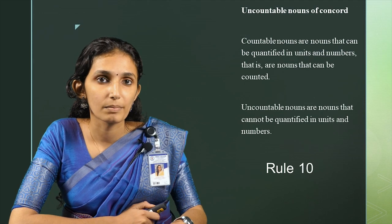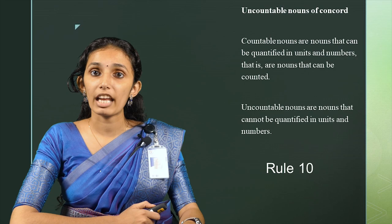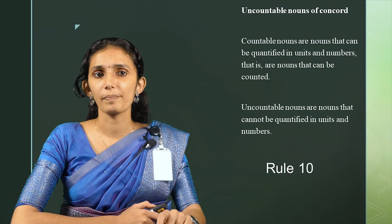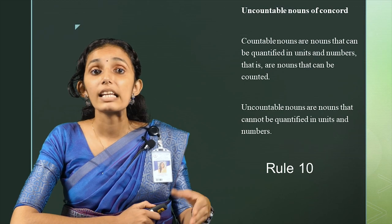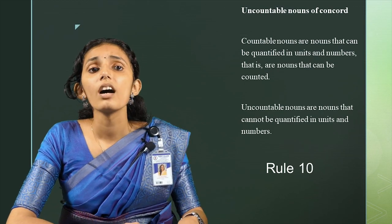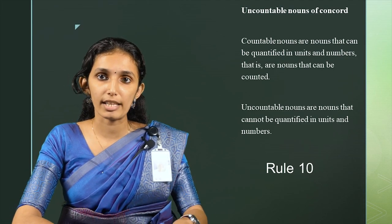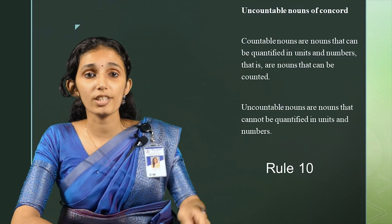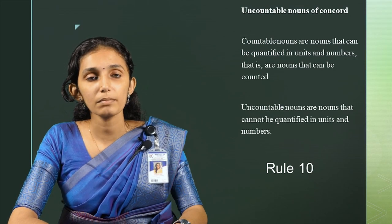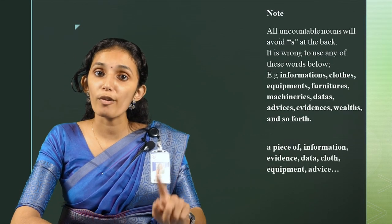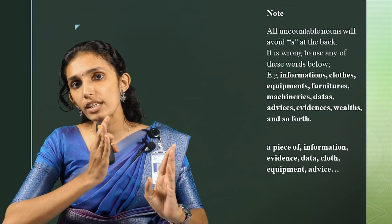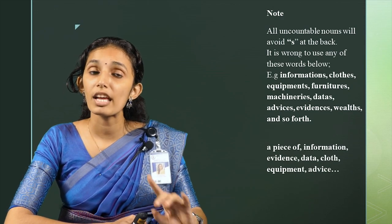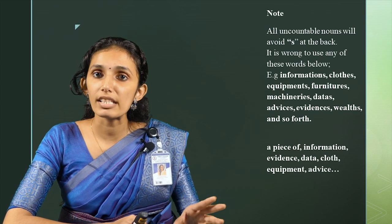Rule number 10: Uncountable nouns of concord. Countable nouns are nouns that can be quantified in units and numbers — for example, chairs, tables, phones. Uncountable nouns cannot be quantified in units and numbers — for example, water, information, or equipment. All uncountable nouns avoid an S at the end. It is wrong to use: informations, clothes, equipments, furnitures, machineries, datas, advices, evidences, and so forth.